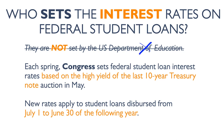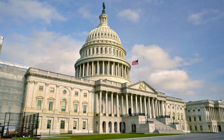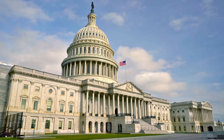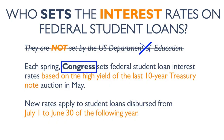It's not the U.S. Department of Education that sets the interest rates on federal student loans — the responsibility lies with Congress. Annually, during the spring, Congress establishes the interest rates for federal student loans, and these updated rates apply to new loans.